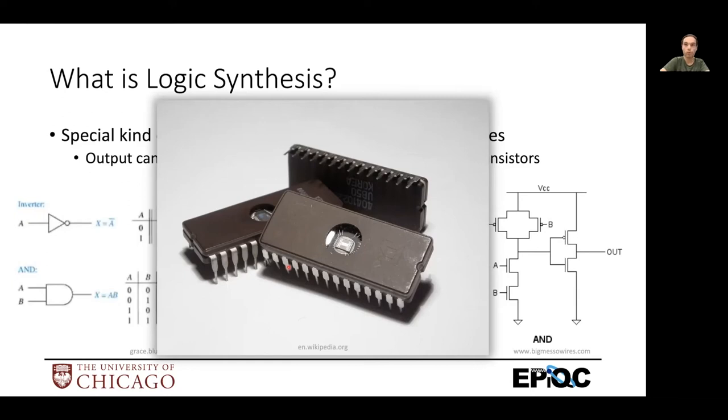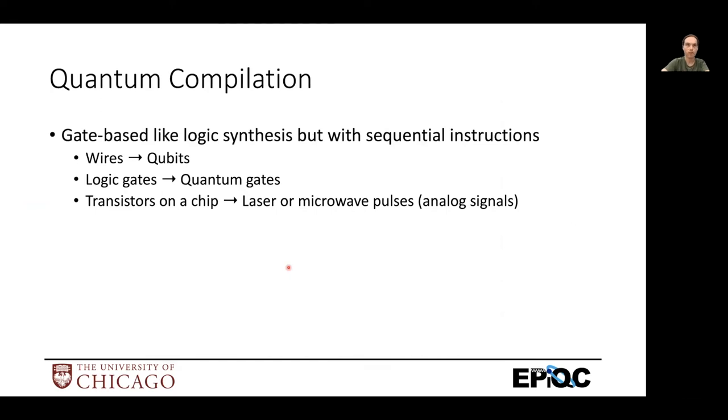So now let's go to quantum compilers and quantum programs. They have some similarities to both regular compilers and logic synthesis. They use gates and what we'll draw as wires but are actually qubits. But the instructions aren't actually physical devices like transistors, they're instructions like for regular compilers.